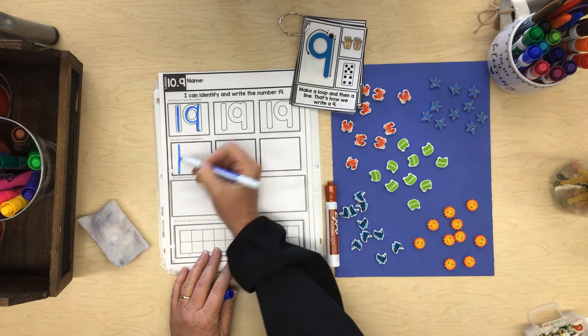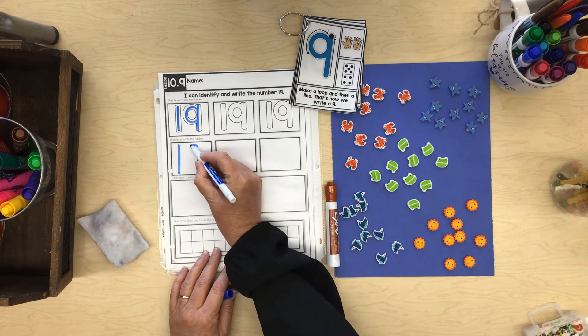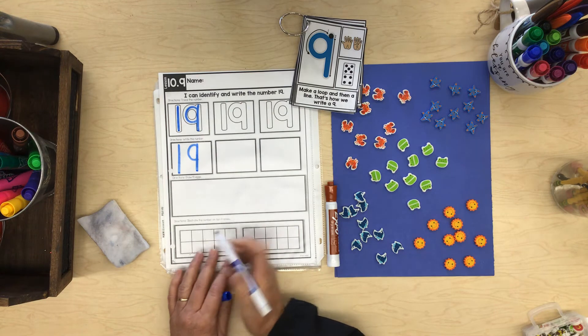Straight down, then you're done. That's how you write a 1. Make a loop, then a line. That's how you write a 9.